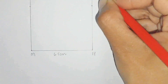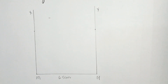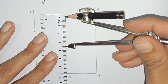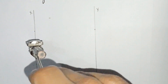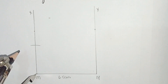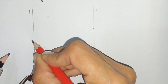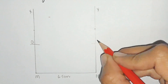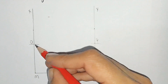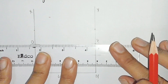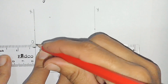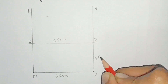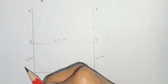Open the compass to 3.5 centimeters. Taking M as center, draw an arc — where it cuts is point O. Taking N as center, mark the point — where it cuts is point P. Join point P with O. This side is 6.5 centimeters and this side is 3.5 centimeters.